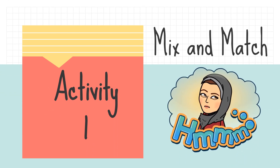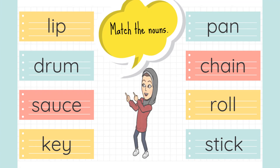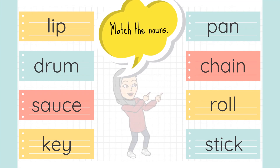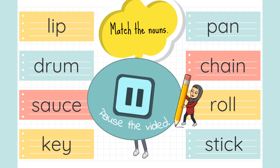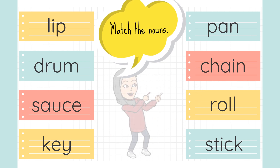Let's begin. Activity one — we are going to do mix and match. For the mix and match today, I want you to match the nouns from the left box to the right box. You can pause this video to figure out which words can match the right words.